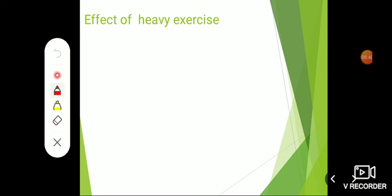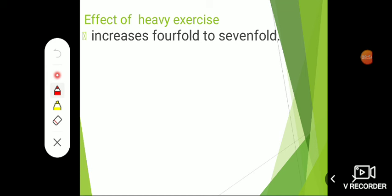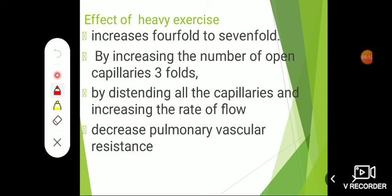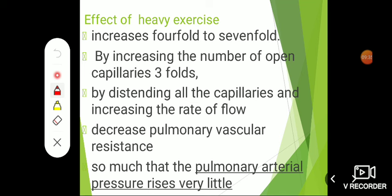The second important feature is vasoconstriction in response to hypoxia. The third feature concerns heavy exercise: in systemic arteries blood pressure rises during exercise, but this could be dangerous for pulmonary circulation. However, the flow increases four to seven times by increasing the number of open capillaries up to three-fold. Many capillaries are normally dormant in the lungs, but when required they open up.